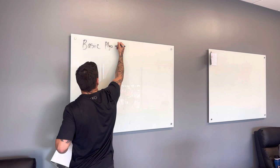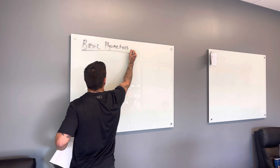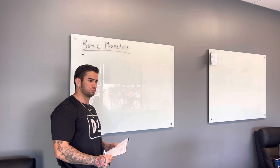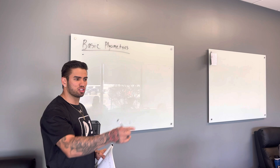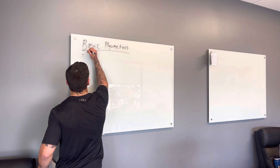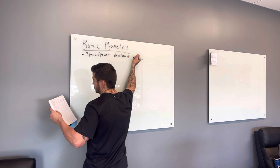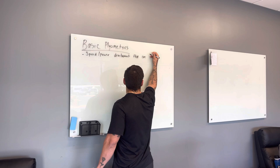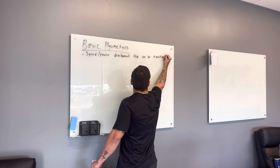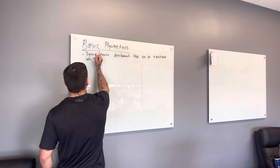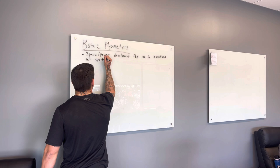We're going to go through some basic plyometrics. What does plyometrics look like? Give me a quick answer. Explosive? Power? Rate of force production? Very good answers. I would say weights can be involved with plyometrics. A good definition, if anyone were to ask you, is speed and power development that can be transitioned into the sport. That's really all we're looking for — power, speed, rate of force development, something we can transition into their sport.